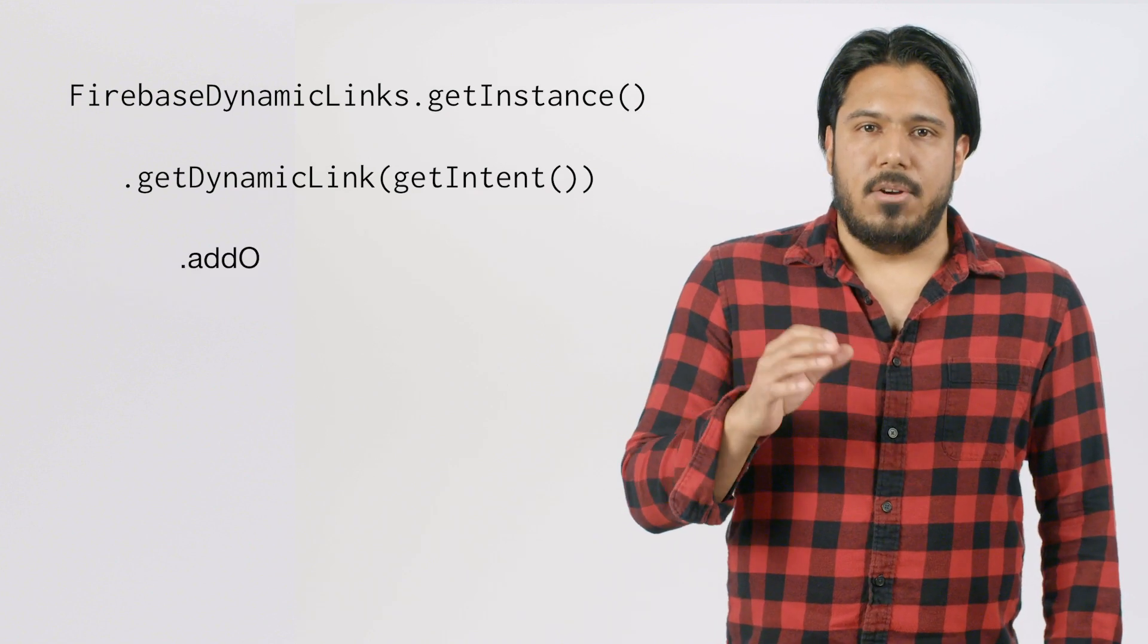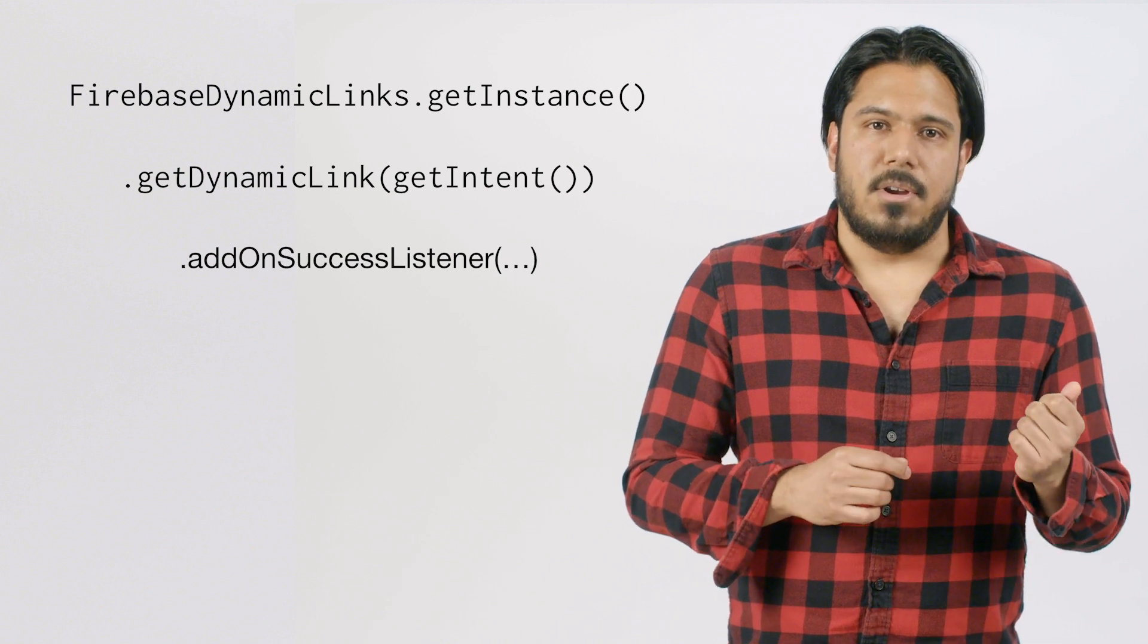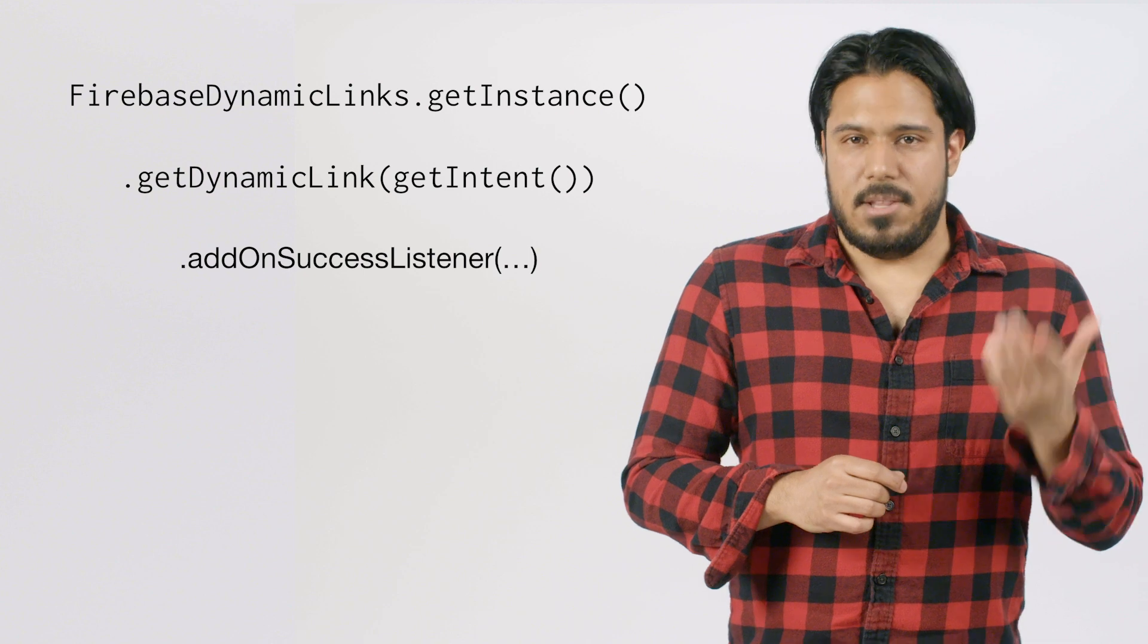Since this call is asynchronous, it returns a task object on which we need to add success and failure listeners. These will be called once it has completed making the fetch for getting the Dynamic Link data. Which finally brings us to the addOnSuccessListener call, where we attach a new onSuccessListener to that task that would be called if everything went according to plan and the call succeeded. In here is where we will add our link handling code, since we will have received the link successfully and can start doing some processing on it.